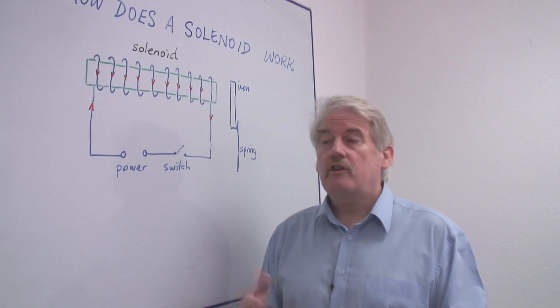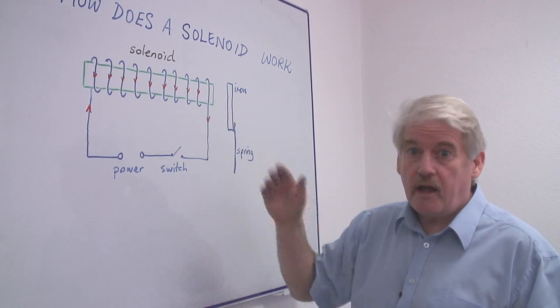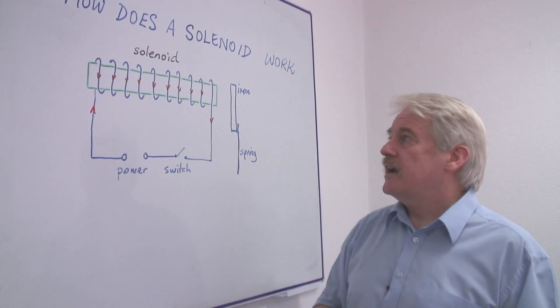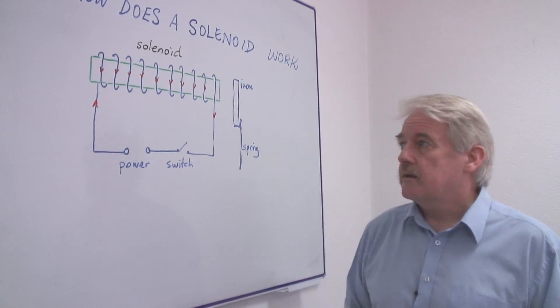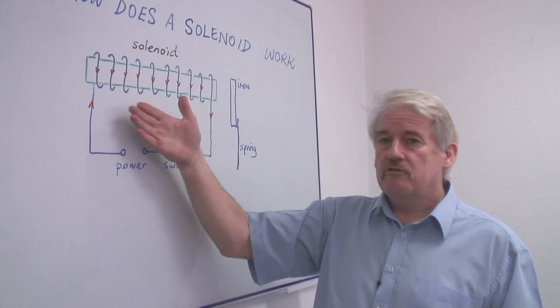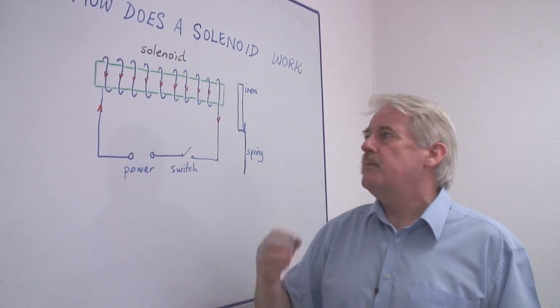The solenoid, the word solenoid means just this coil of wire. But it becomes a magnet when the current is switched on. When it's switched off, it stops being magnetic. The more the current, the greater the current, the more powerful the magnet.